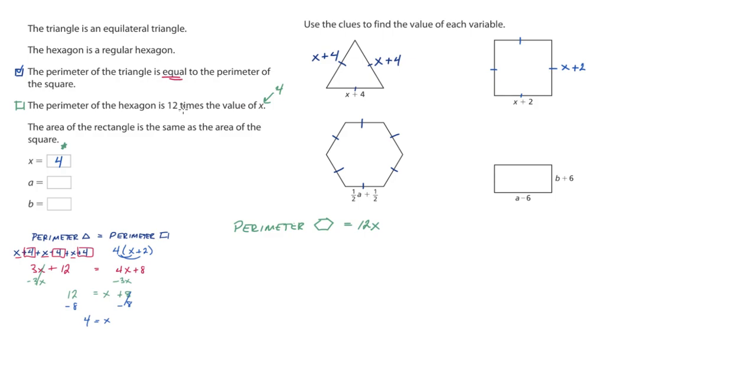So 12 times 4 is 48. Now we just have to find the perimeter of the hexagon. And we just went over two different strategies. We could go through and add up all the sides. 1 half a plus 1 half. 1 half a plus 1 half. And repeat this process all the way around.